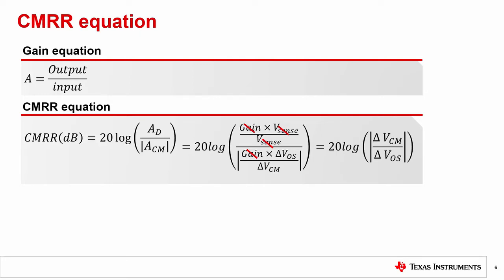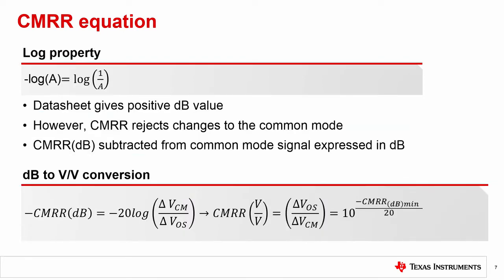As CMRR should reduce a signal and therefore have a ratio less than 1, you might ask, should not the ratio be reversed? Actually, the ratio agrees with our previous definition when you consider that the CMRR value in dB would be subtracted or rejected from the common mode signal in dB. According to the properties of logs, subtracting the log of a value A is equal to the log of 1 over A.